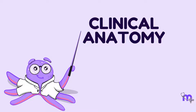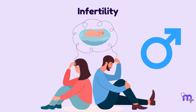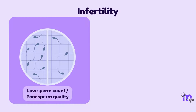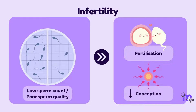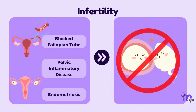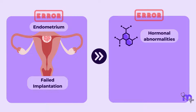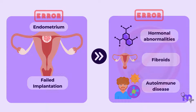Regarding the clinical anatomy of fertilization, the main issue is infertility, occurring in both males and females. Low sperm count or poor sperm quality can reduce the chances of conception. Sometimes women have blocked fallopian tubes due to conditions such as pelvic inflammatory disease and endometriosis, preventing sperm from meeting the egg. Finally, failure of implantation can occur due to hormonal or uterine abnormalities like fibroids, or autoimmune disorders that reject the embryo.